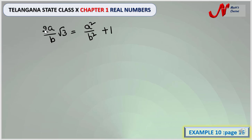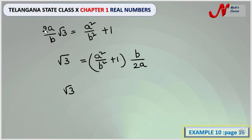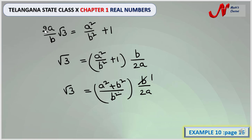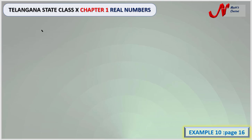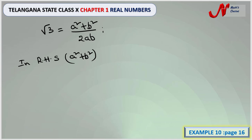To isolate √3 on the LHS, we transpose 2a/b to the RHS, so the equation becomes √3 = (a²/b² + 1) · (b/2a). Simplifying, we cancel one b, giving √3 = (a²/b² + 1) · (1/2a), which can be written as √3 = (a² + b²) / (b · 2a), and then as √3 = (a² + b²) / (2ab).